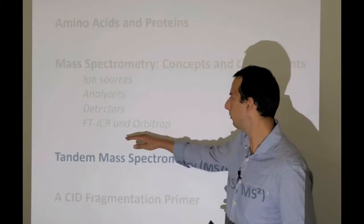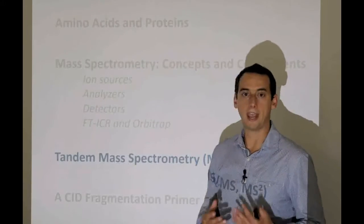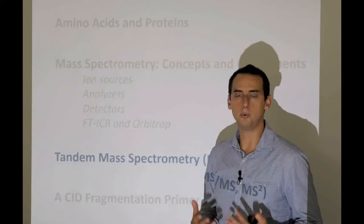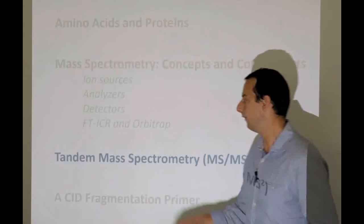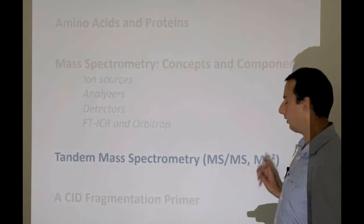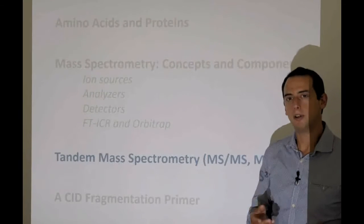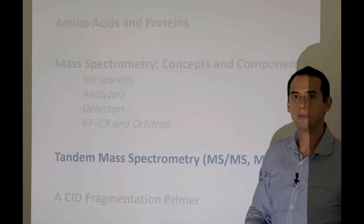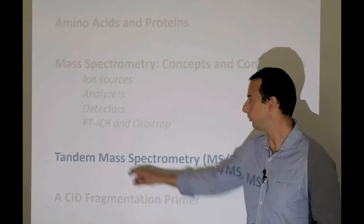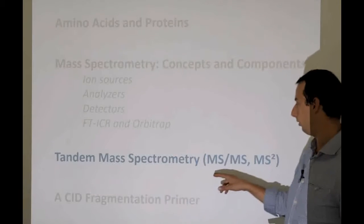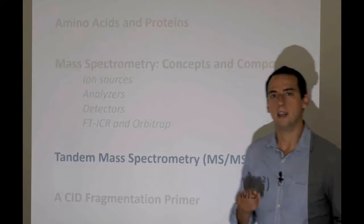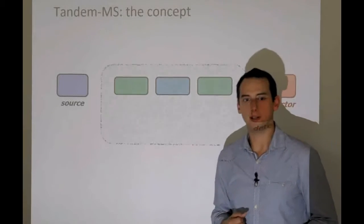With that, we actually summed up everything we needed to know about the actual instruments themselves. Now we're going to look at some interesting new ways of doing mass spectrometry, and the most important one of those is tandem mass spectrometry, or MS-MS, or MS-squared. Tandem mass spectrometry is meant to break an analyte and then analyze the fragments.